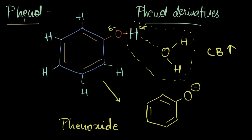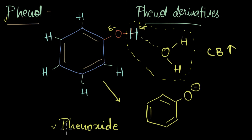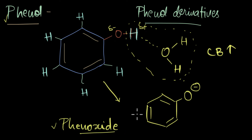The more stable a conjugate base is, the more acidic the molecule becomes. So if we say phenol is a very acidic molecule, it must be true that phenoxide is a stable entity. I encourage you to pause the video and identify why phenoxide is a stable entity.